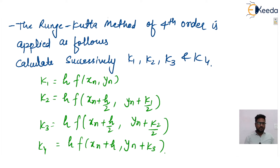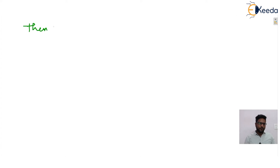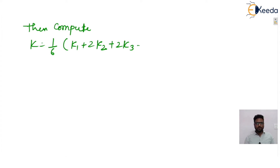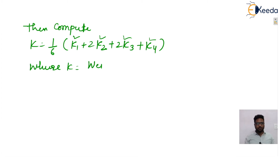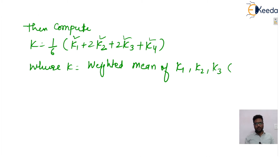After finding k1, k2, k3, k4, the next task is to compute k, where k = (1/6)(k1 + 2·k2 + 2·k3 + k4). In this manner we can find out k. Here k is the weighted mean of k1, k2, k3, and k4. Finally, yn+1 is calculated as yn + k.